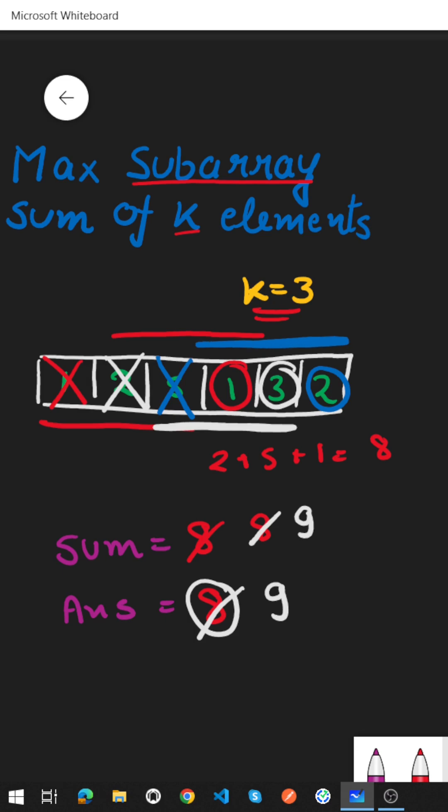So sum of 1, 3 and 2 is 6. So we will update our sum by 6 and since 6 is lesser than our maximum sum so our sum will remain as it is.